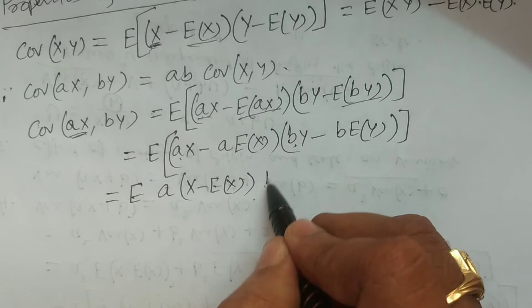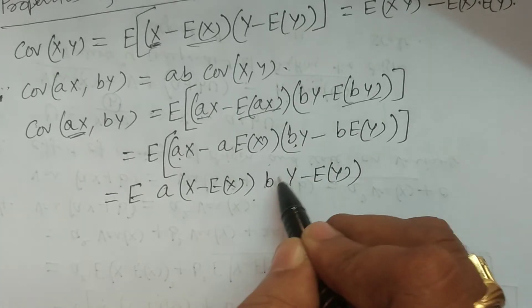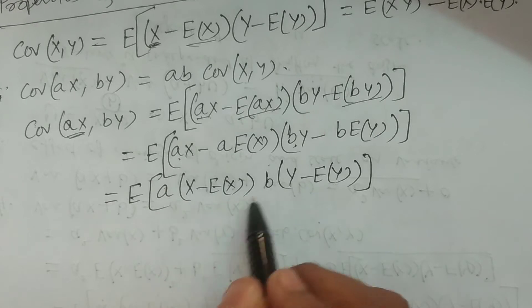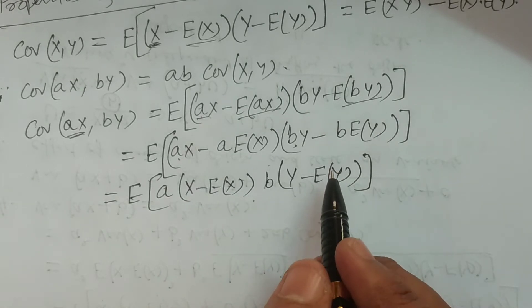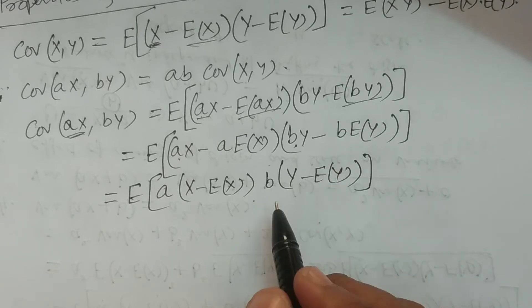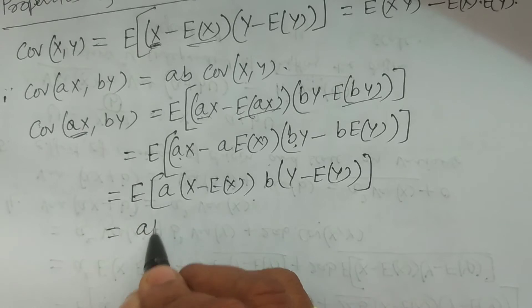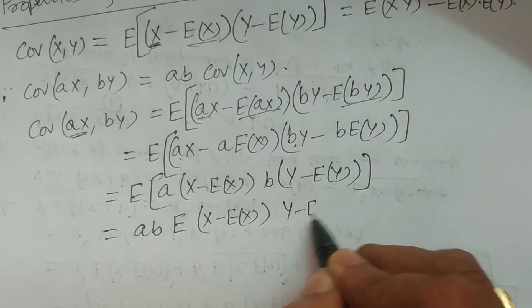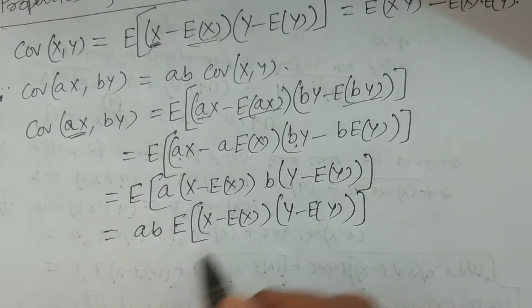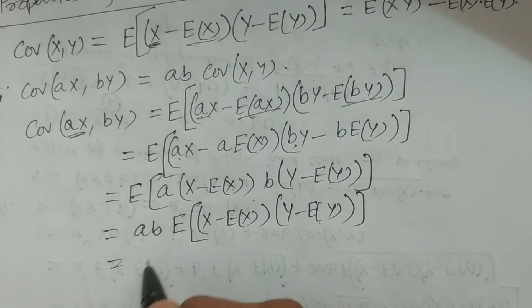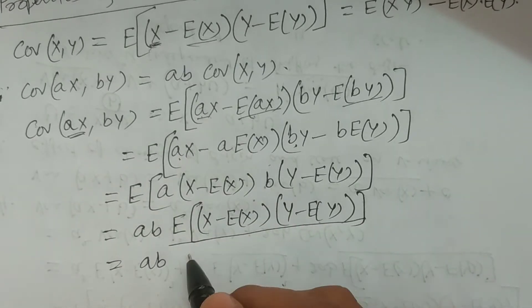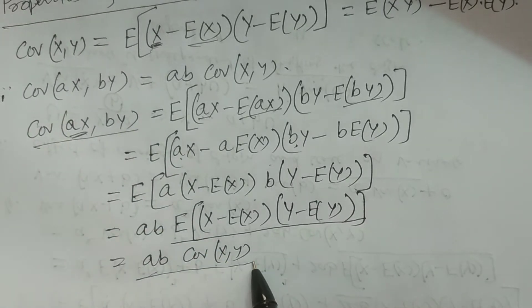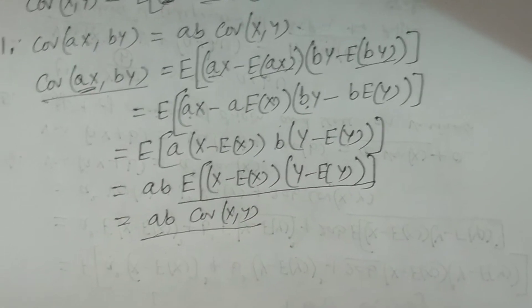Taking a and b common, we get expectation of ab times (x minus expectation of x) times (y minus expectation of y). From the property of expectation, we can take ab outside: ab into expectation of (x minus expectation of x)(y minus expectation of y). This is the formula of covariance of x, y. Therefore, covariance of ax, by is nothing but ab times covariance of x, y. This is property number one.